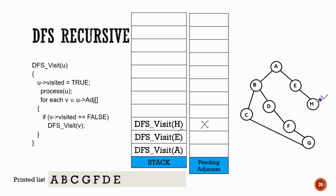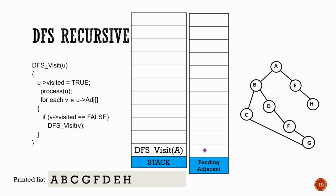H is printed and we get back to E. After that, since there are no more adjacent nodes, we get back to A. Since all the adjacent nodes are visited for A, DFS visit A is completed. This is the recursive process of the DFS algorithm.